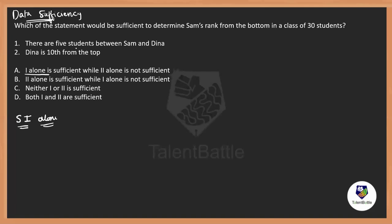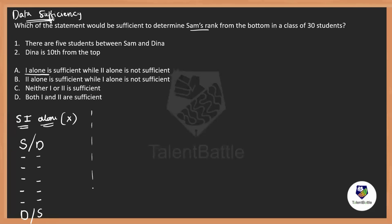Statement one says: there are five students between Sam and Dina. But is it clear that Sam is on top and Dina is on the bottom? No — there are two possibilities. So using statement one alone, can you exactly determine Sam's rank from the bottom? No, it can be at any of the 30 positions. Therefore, statement one alone is insufficient.